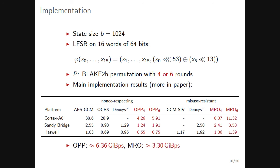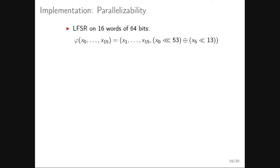For the misuse-resistant variant MRO, Haswell achieves around 1 cycle per byte, or 1.4 for the six-round variant. In throughput terms, OPP reaches about 6.36 gigabytes per second and MRO about 3.3 gigabytes per second on Haswell.